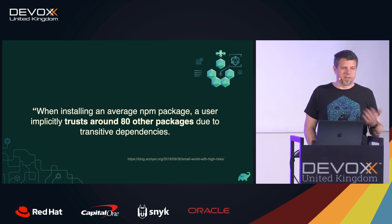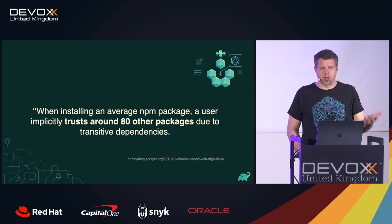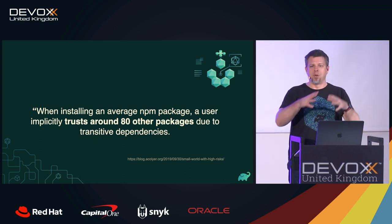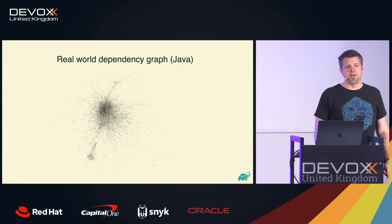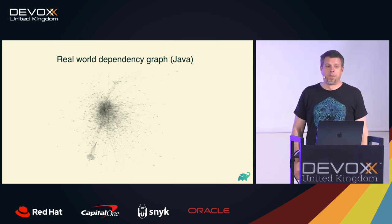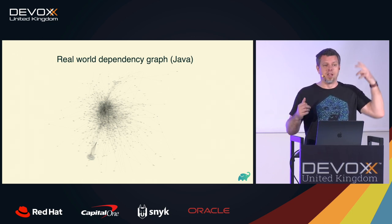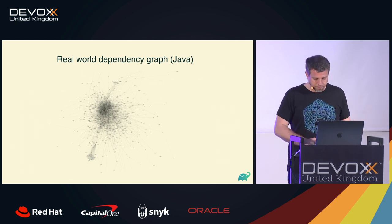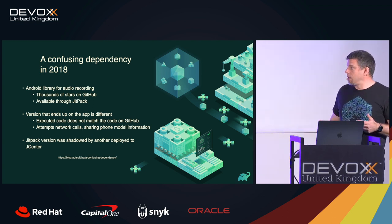We often hear about the JavaScript world's crazy amount of dependencies — on average around 80 other packages for a single large dependency. You might say 'I'm doing Java, it doesn't work that way, we have much bigger granularity in Maven packages.' Well, this is the dependency graph of a real Java project in a large company — a staggering amount of dependencies pulled in as part of their build.